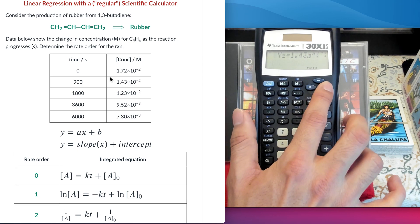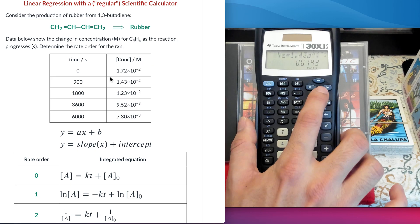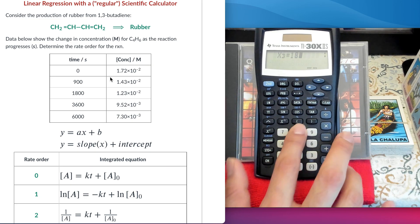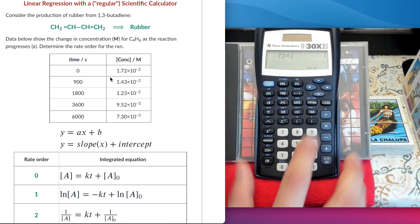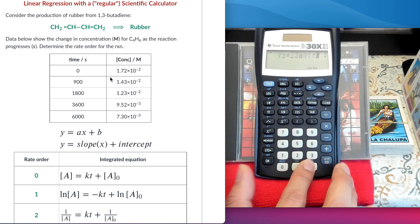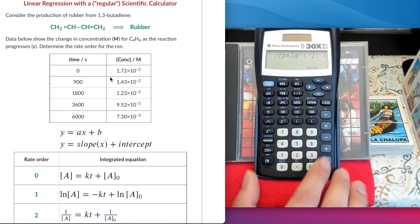Let me check if I entered it correctly. Yes. So, 10 to the minus 2. Third, 1800. And then, the concentration. Don't forget to use the arrows. Because if you don't use the arrows, then what is going to happen is that you're going to overwrite whatever you already have in that particular entry.